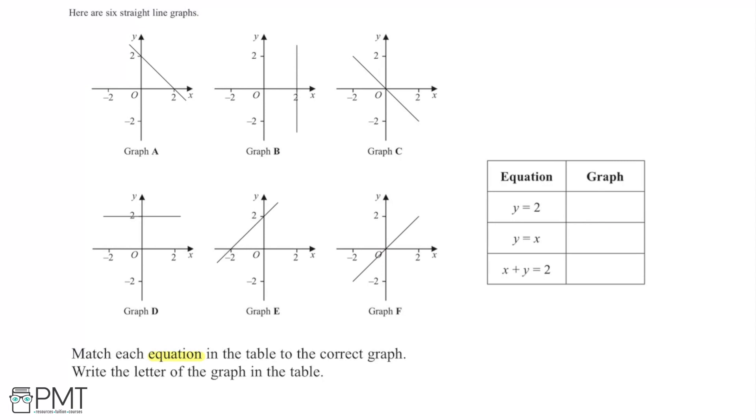Starting with the graph of y = 2, this is going to be a straight line graph where all of the points on the line have a y-coordinate of 2.